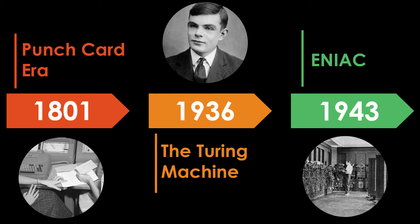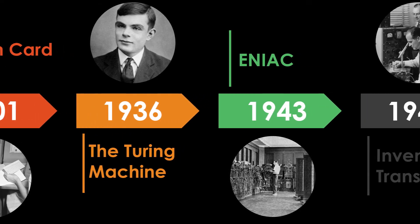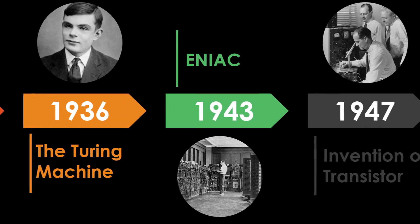It is called the Turing machine. It is capable of computing anything that is computable. The central concept of the modern computer was based on these ideas. In 1943, two University of Pennsylvania professors, John Mauchly and J. Presper Eckert, built the electronic numerical integrator and calculator. It is considered the grandfather of digital computers.